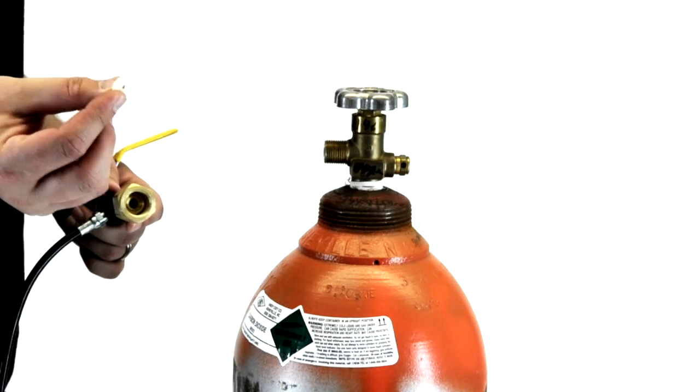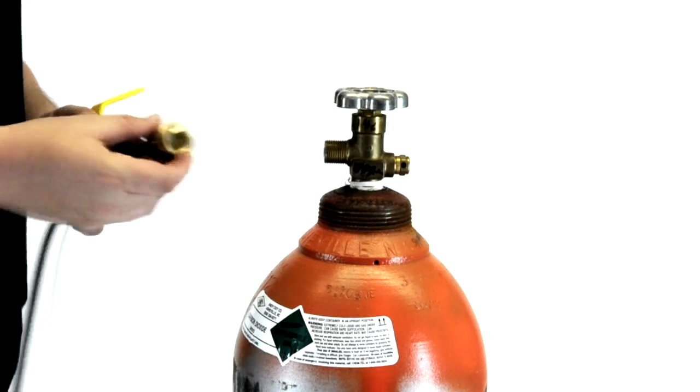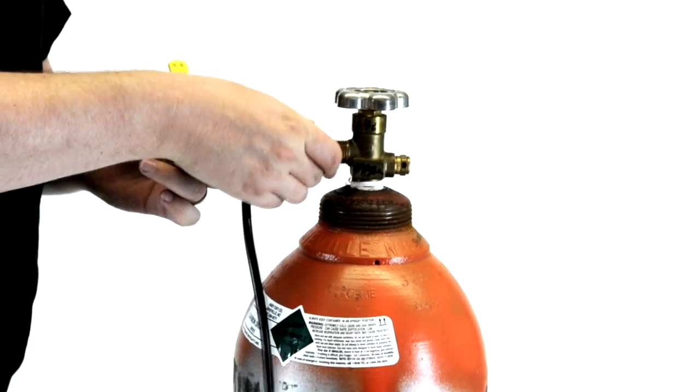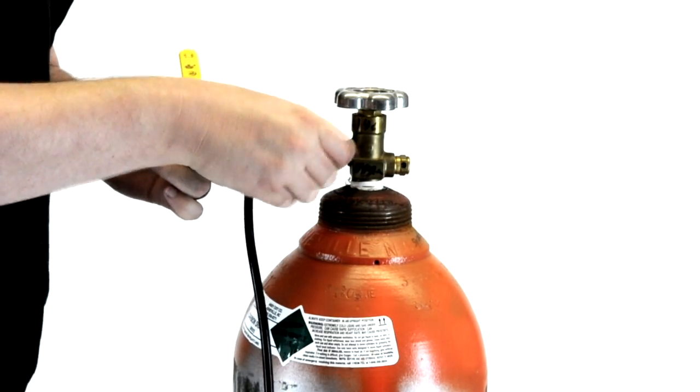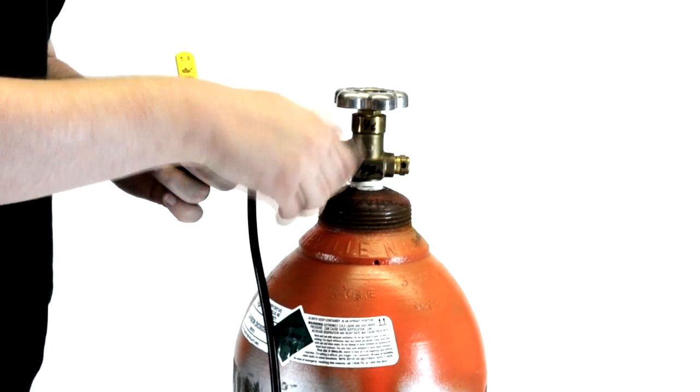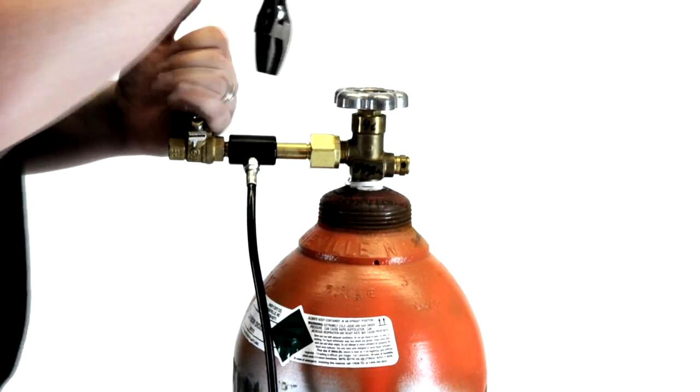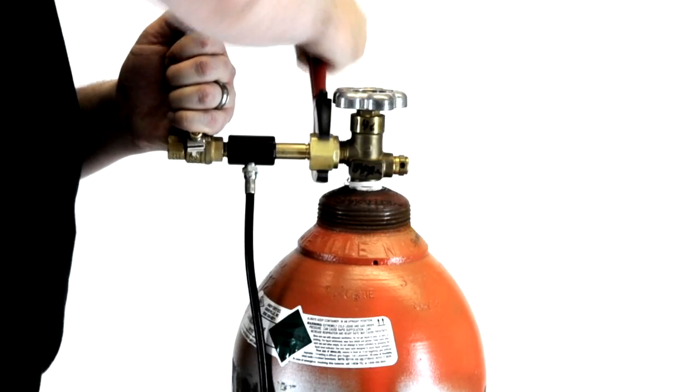Step two: you're going to take the nylon washer that comes supplied with the fill station, place it inside here, place this on the tank and hand tighten. Once you get it hand tightened, you need to take your crescent wrench and continue to tighten it the rest of the way.